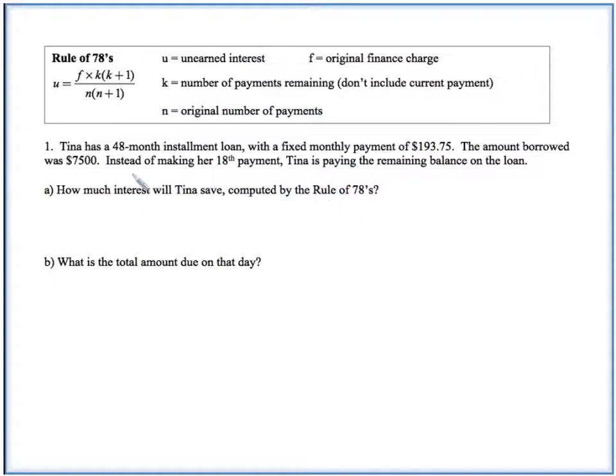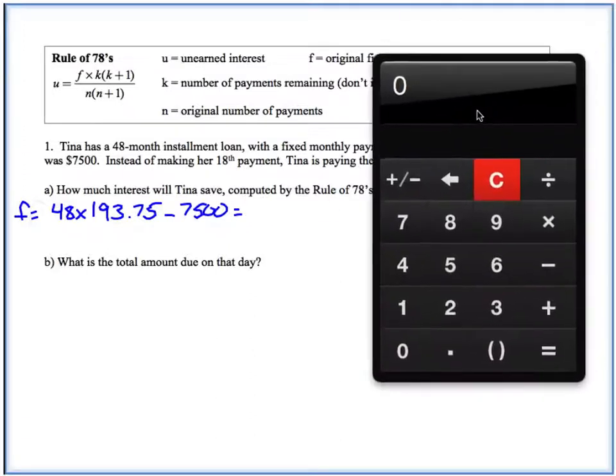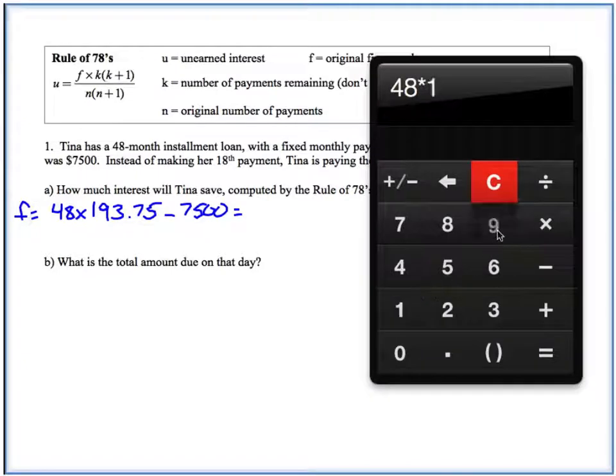Some things that we need to find here. One would be F, or the original finance charge. So our finance charge is going to be the total amount she pays, minus how much she borrowed. So we know we have 48 months of $193.75 each. So this is how much she pays, principal and interest, and then we're going to subtract the principal here of $7,500. And so that's going to leave us with a finance charge. Let's calculate it out: 48 times 193.75 minus $7,500. And so we have $1,800 is our finance charge.